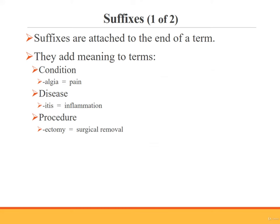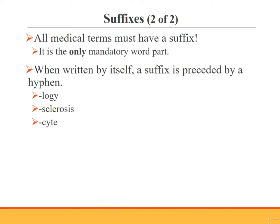A suffix is found at the end of a term and adds meaning. For example, some suffixes refer to a condition — the suffix alge is such a suffix and it means pain. Other suffixes describe a disease; the suffix itis is an example of this and it refers to inflammation. A suffix may also give information about a procedure; the suffix ectomy, for example, means surgical removal. All medical terms must include a suffix. It is the only mandatory word part. This is the one rule of medical terminology that can never be broken.